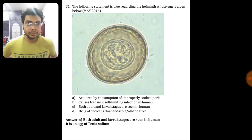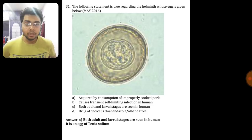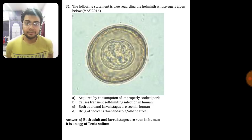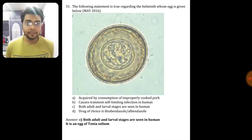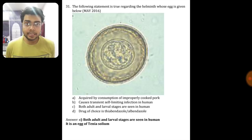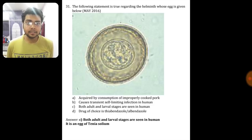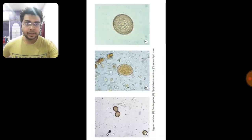Our third question: the following statement is true regarding the helminth whose egg is given below. If you see, this egg belongs to Taenia solium. What they have asked is not the name but something in detail about the organism. The correct option here is that for Taenia solium, both the adult and the larval stage are seen in humans.